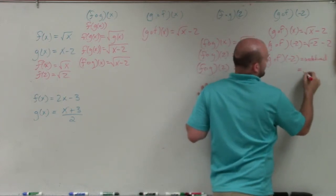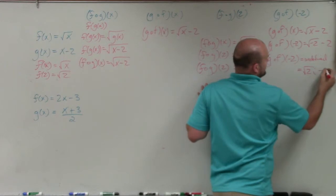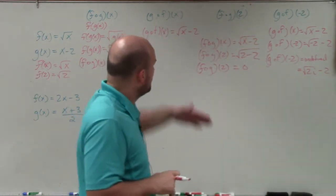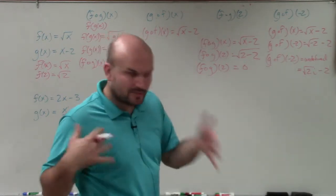Or depending on what you are going over, you could also say it's 2i minus 2. You could also use the imaginary number system to help you write in the answer. So that's just kind of a basic idea when we're dealing with radicals.